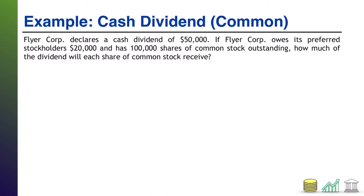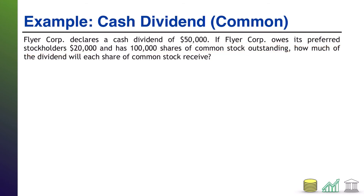Here's another one, slightly different. FlyerCore declares a cash dividend of $50,000. If FlyerCore owes its preferred stockholders $20,000 and has 100,000 shares of common stock outstanding, how much of the dividend will each share of common stock receive? Sometimes investors want to know how much dividend each share of common stock is actually earning, rather than just the total dividend declared.